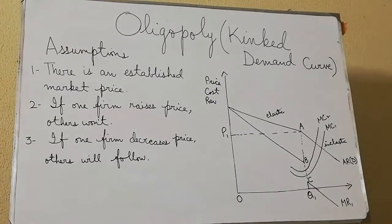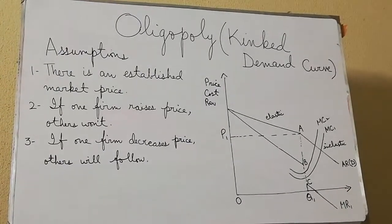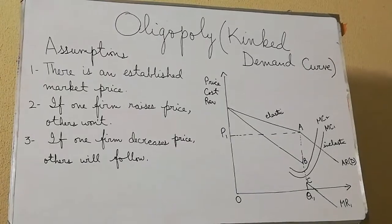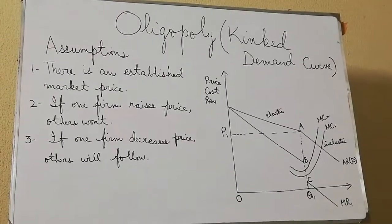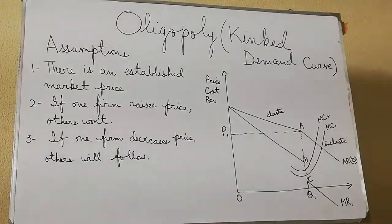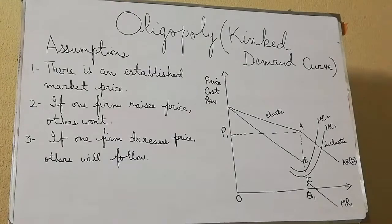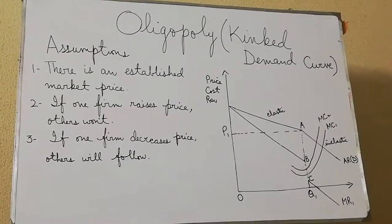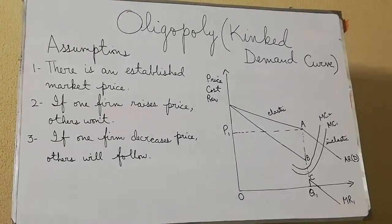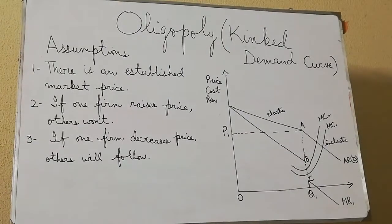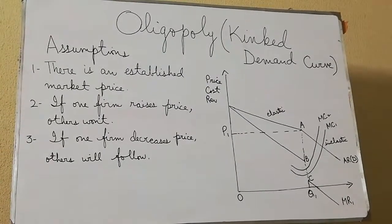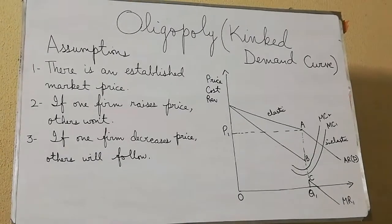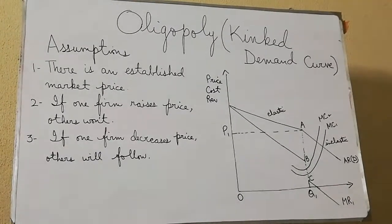Hello everyone. In this video I'll discuss one of the non-collusive models of oligopoly, that is the kinked demand curve. This model is based on a few assumptions. First of all, there is an established or prevailing market price for which all the sellers are satisfied and they charge the same price.